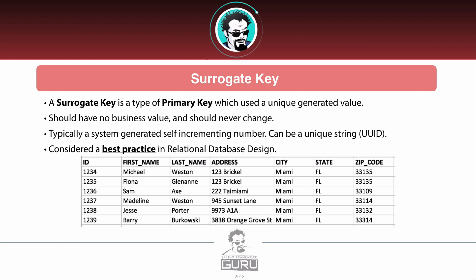I've worked with a number of databases that did not have surrogate keys, where they were doing something like concatenating first name and last name, and it is really awful to work with. Modern databases have generally adopted surrogate keys, but you may encounter older databases where this is not being used. It's a very poor practice, and we'll be getting into relational database best practices in an upcoming lecture.